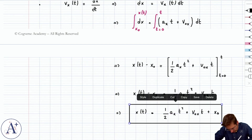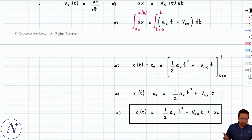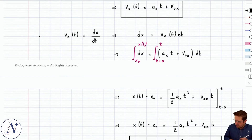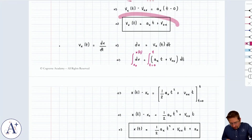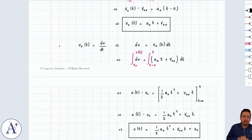Be comfortable with these derivations — it doesn't hurt to redo them. But the functions for vₓ(t) and x(t) can be used directly off the shelf, as long as your acceleration is constant. Since that happens quite a bit, it's fine to just plug in acceleration, initial velocity, and initial position without doing the full derivation each time. These equations give you velocity and position as a function of time — plug in time, get velocity and position, or back-solve if you know position or velocity.